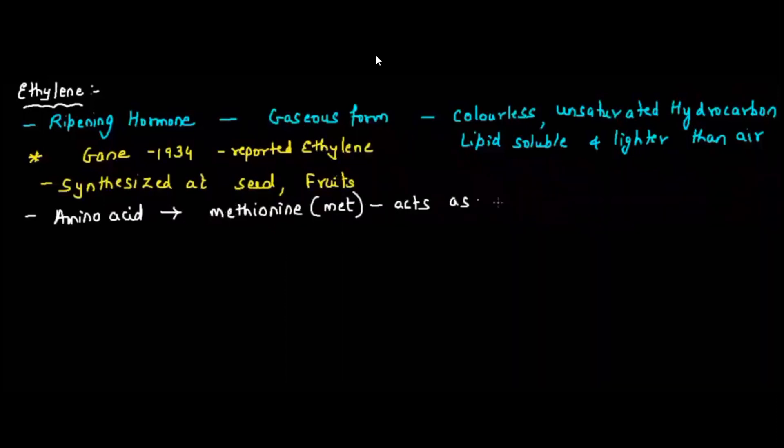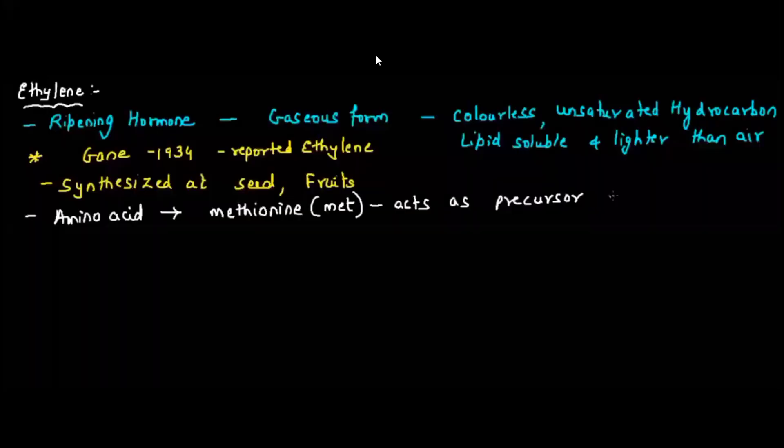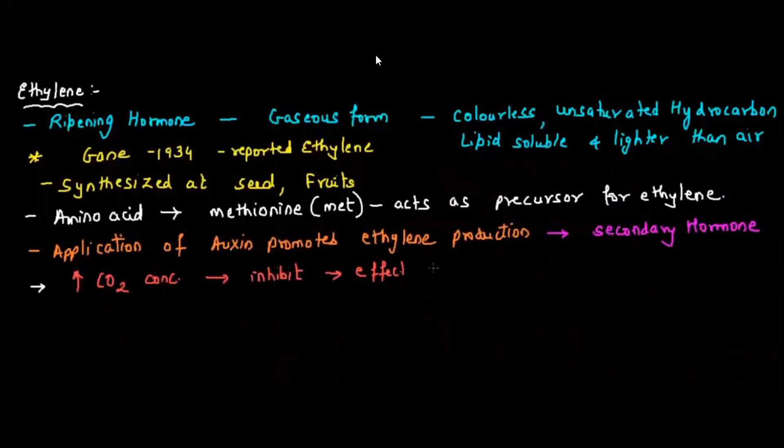The amino acid methionine is regarded as a precursor, so methionine acts as a precursor for the synthesis of ethylene. Ethylene synthesis will take place because of auxin. Application of auxin will always promote ethylene production, and that's why ethylene is primary hormone and auxin is called secondary hormone. High concentration of carbon dioxide will inhibit the ethylene production.